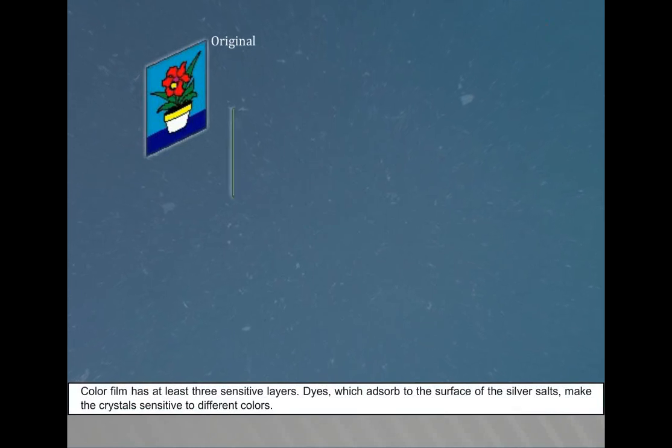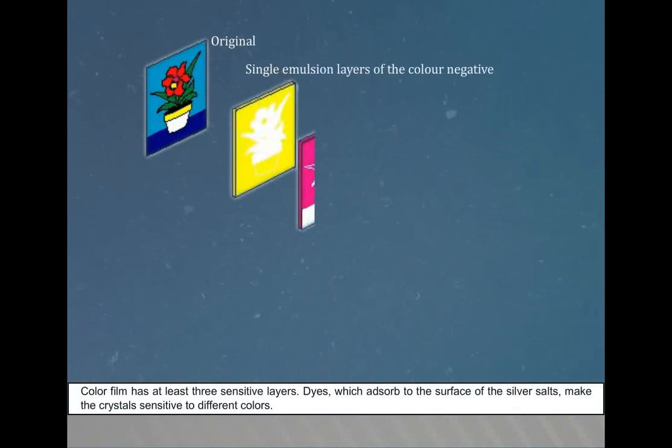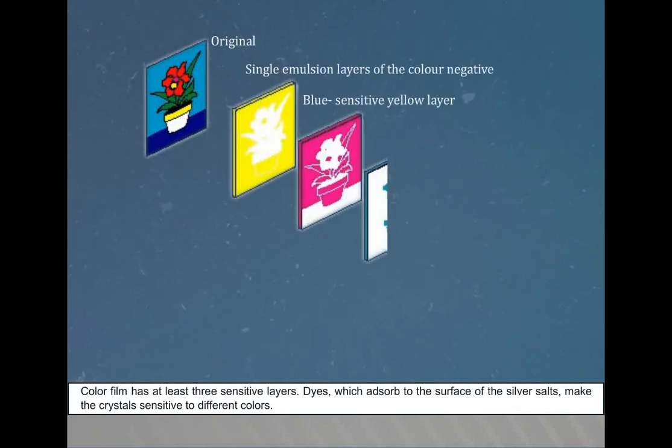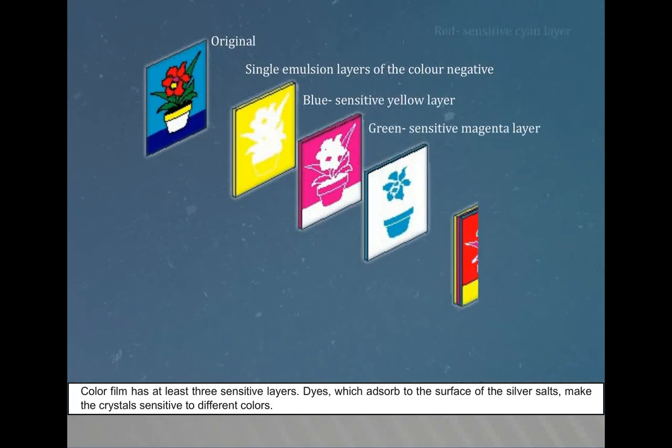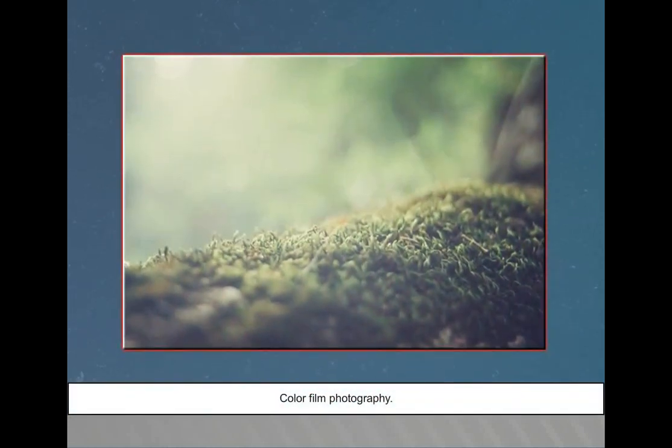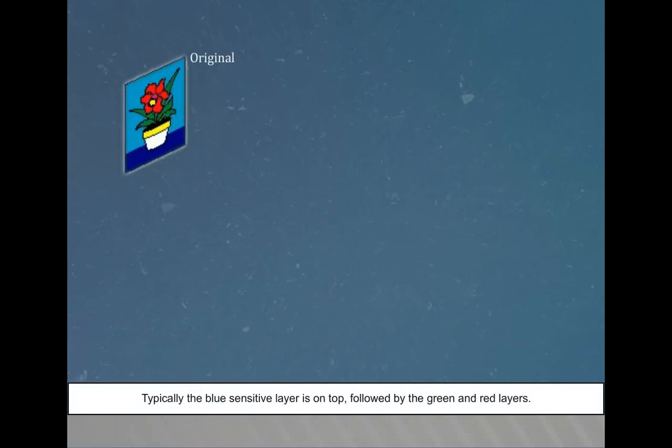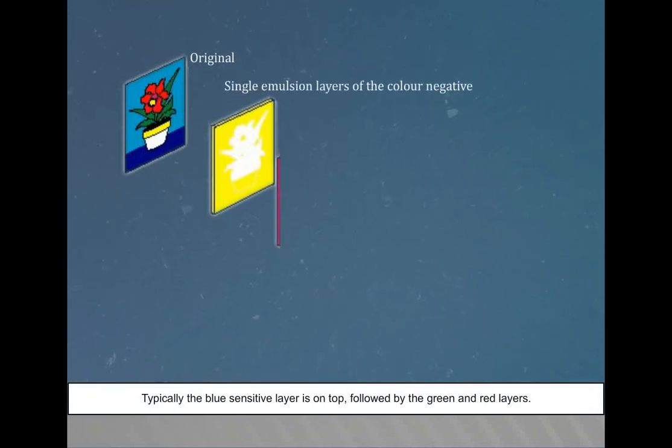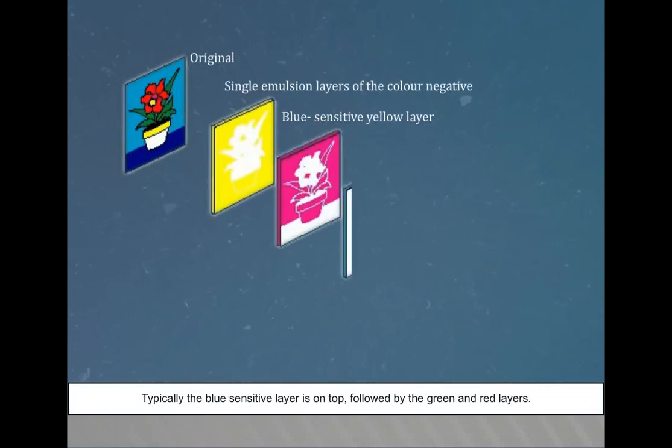Color film has at least three sensitive layers. Dyes which absorb to the surface of the silver salts make the crystals sensitive to different colors. Color film photography. Typically, the blue sensitive layer is on top, followed by the green and red layers.